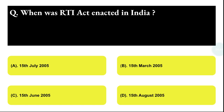Next question: when was the RTI Act enacted in India? Option A: 15 July 2005, Option B: 15 March 2005, Option C: 15 June 2005, Option D: 15 August 2005. The correct answer is option C, that is 15 June 2005.